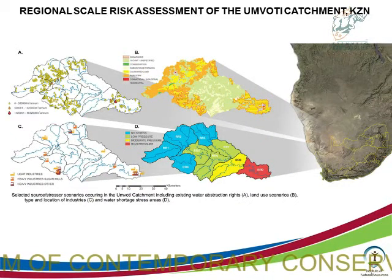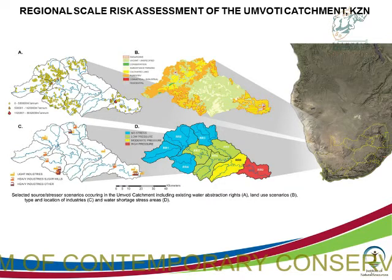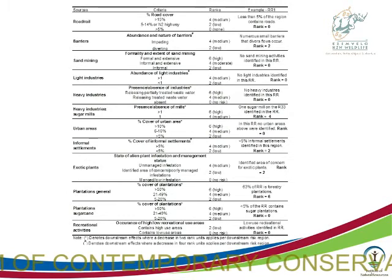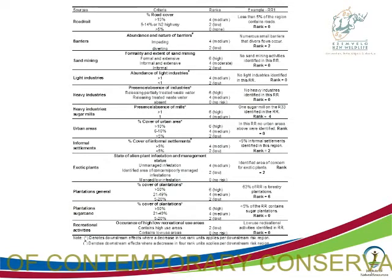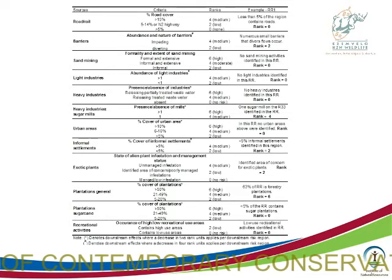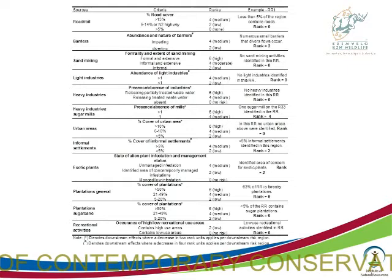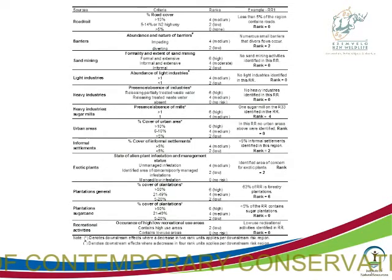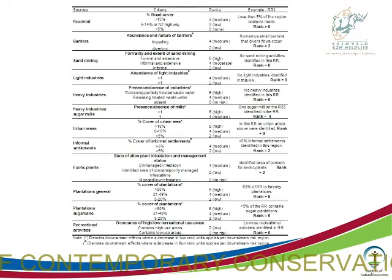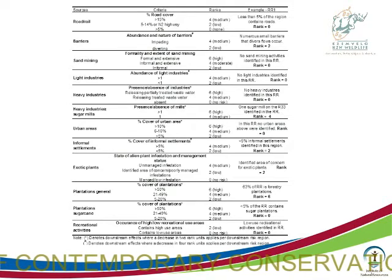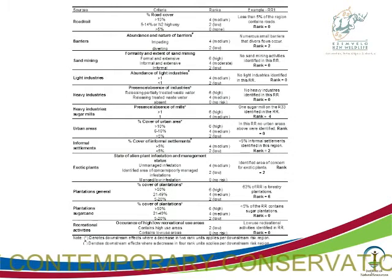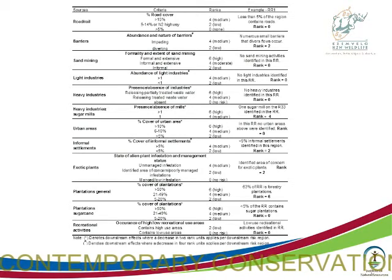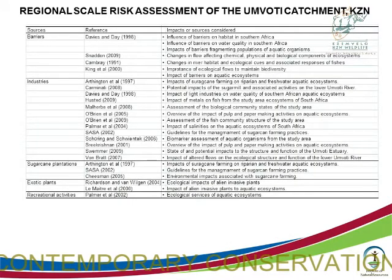We collected all the data — flows, land use, water licence data — and formed a ranking system. We establish ranks: zero, low, medium, and high. Zero represents no threat, no risk, natural. High is totally unacceptable and unsustainable. Moderate is acceptable but approaching unsustainability — like a TPC concept where you must manage it. Low means there is some impact but it's sustainable and acceptable. We're managing usually towards low risk, not zero risk, and we reference all the evidence for each endpoint.